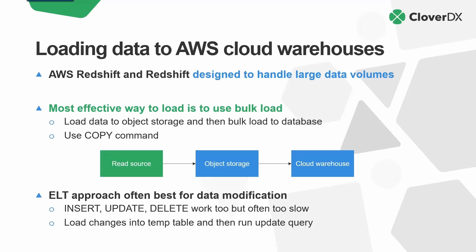The best way to migrate data from your source systems into one of these specialized warehouses is to use bulk uploads. Typically these warehouses hold really large volumes of data, so you don't want to use conventional insert logic — it's much more effective to do bulk uploads. Take your data from your source system, wherever it might be, copy it up into object storage — S3 — and then once it's in S3, use a Redshift or Snowflake COPY command to move it from S3 into the warehouse. Then maybe after it's in the warehouse, do some post-load transformation.